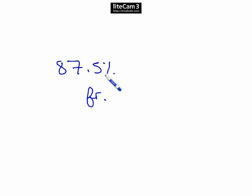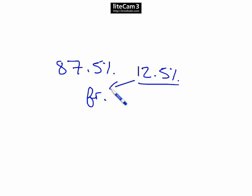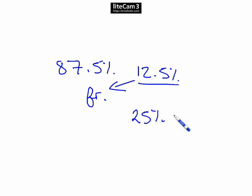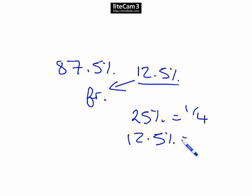If 87.5% passed, then 12.5% didn't pass, which is what we're after as a fraction. If you don't know it straight off, look at it simply: double 12.5 gives you 25, and 25% is a quarter. This is half as big, so 12.5% is one eighth. Our answer is 1/8.